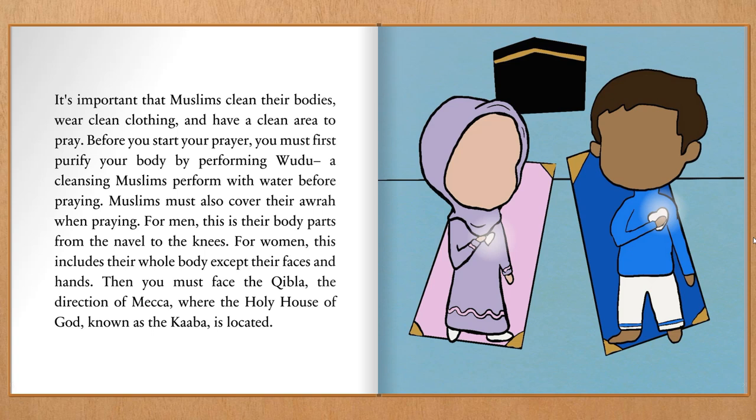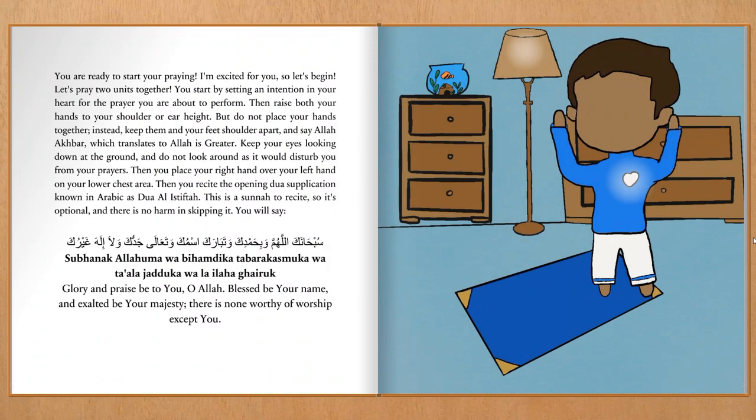It's important that Muslims clean their bodies, wear clean clothing, and have a clean area to pray. Before you start your prayer, you must first purify your body by performing wudu, a cleansing Muslims perform with water before praying. Muslims must also cover their awra when praying. For men, this is their body parts from the navel to the knees. For women, this includes their whole body except their faces and hands. Then you must face the Qibla, the direction of Mecca, where the Holy House of God, known as the Kaaba, is located. You are ready to start your praying.